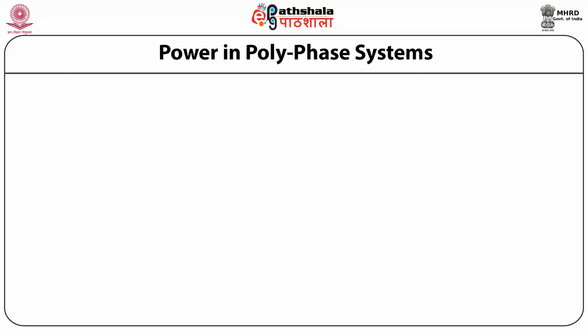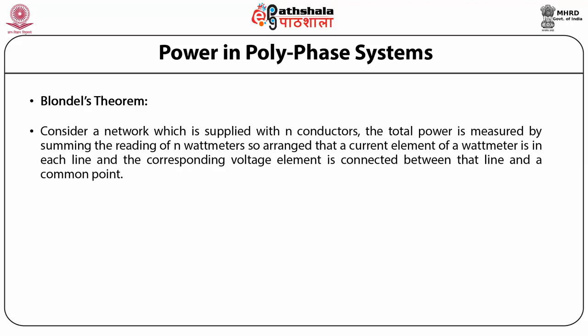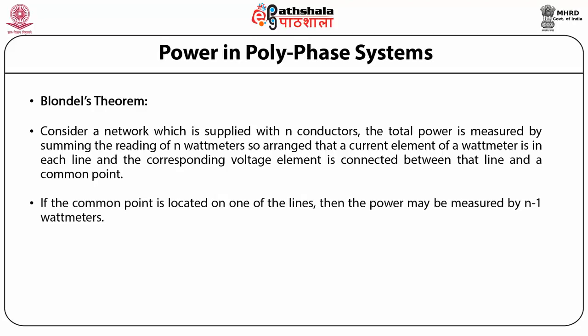Let us study the power in polyphase systems. First of all, we need to understand Blondel's theorem. Consider a network which is supplied with N conductors. The total power is measured by summing the readings of N wattmeters so arranged that a current element of a wattmeter is in each line and the corresponding voltage element is connected between that line and a common point. If the common point is located on one of the lines, then the power may be measured by N-1 wattmeters.